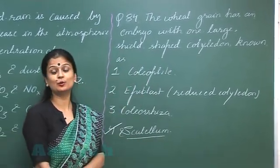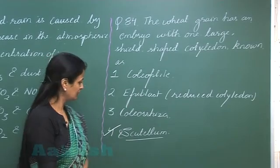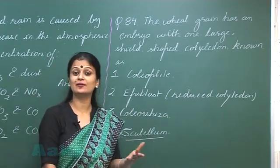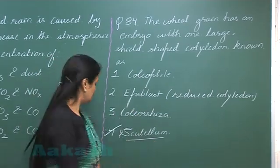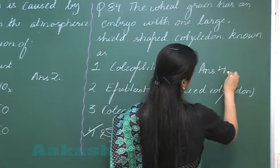Now coleoptile, coleoptile is a covering which is present over the plumule. Coleorhiza is a sheath which is present on the radicle. So the right option for this question is option number four.